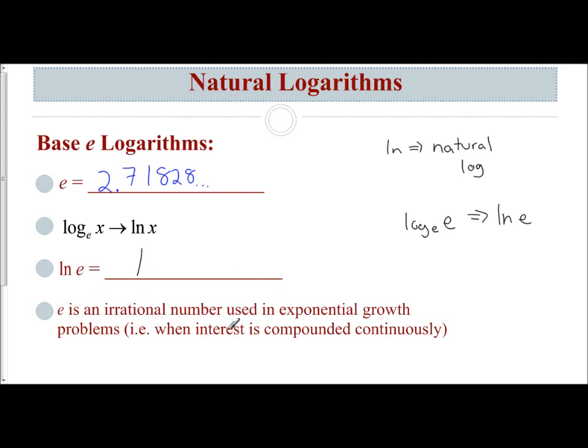We use e with exponential growth when interest is compounded continuously. Many students do not like natural logs, and it's hard for us as teachers to understand why, because it's just another way to write logs. Instead of writing log base e every time, we just write ln. It's shorter, it's quicker, but it means the same thing.